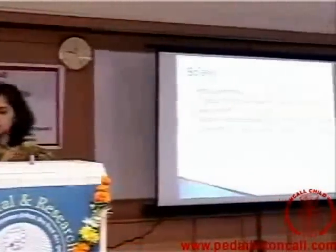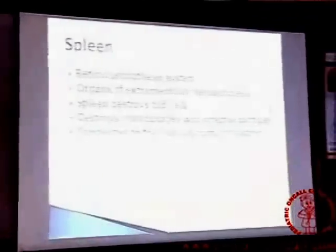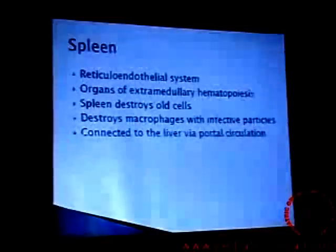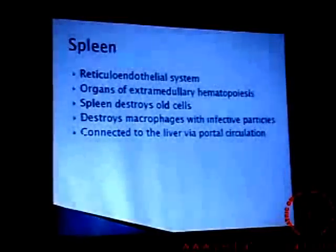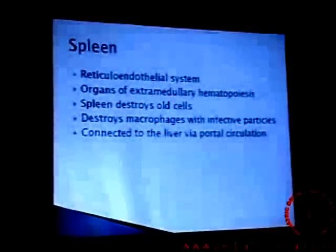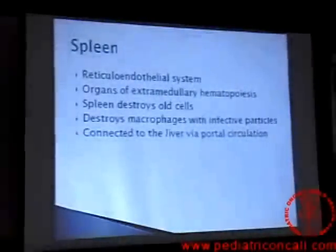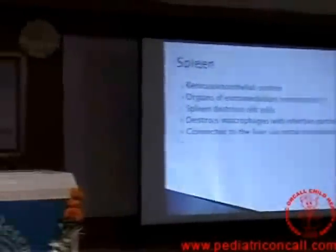Why would a liver and spleen enlarge? That is the first question. There is something wrong in the liver or spleen — that's why they are enlarging. Because there is something wrong, they need to function better. As they need to function better, they need to increase their capacity. And because they need to increase their capacity, they enlarge. So if there is something wrong in the function, the organ enlarges. So what would be the functions of the spleen? If we could understand the functions of the spleen, we would understand which dysfunction causes it to enlarge.